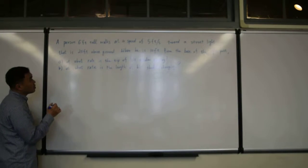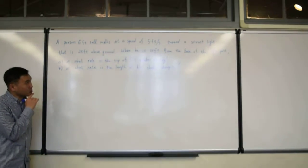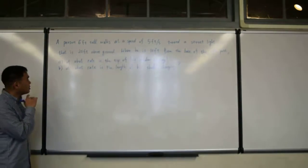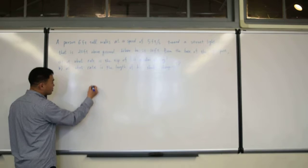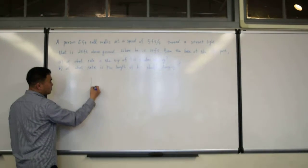A person 6 feet tall walks at a speed of 5 feet per second toward a street light that is 20 feet above the ground. So here is a street light 20 feet above the ground.